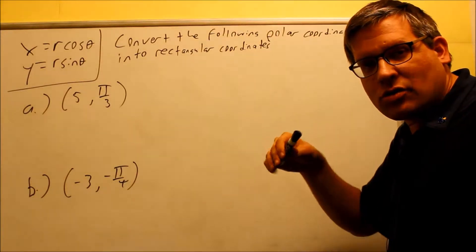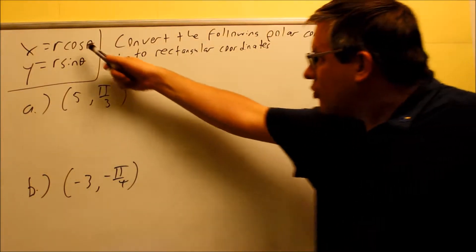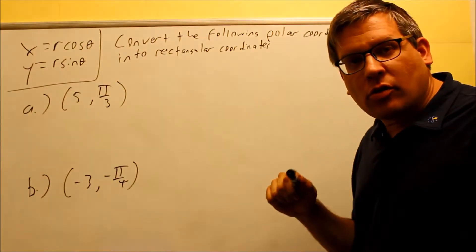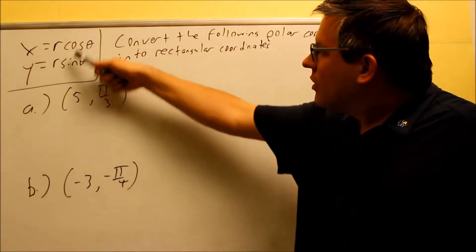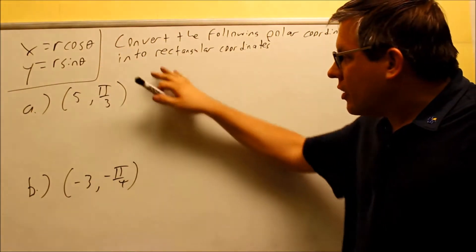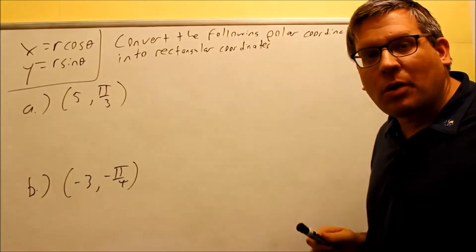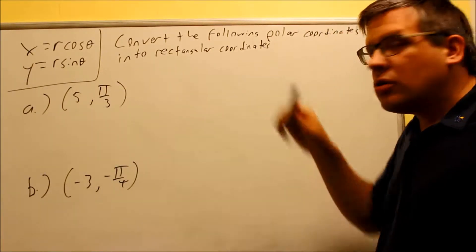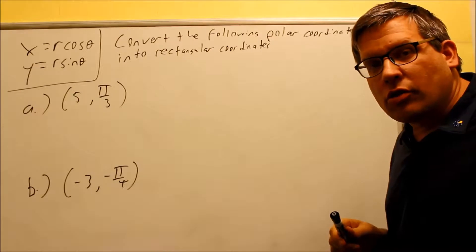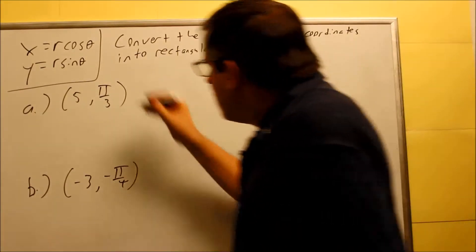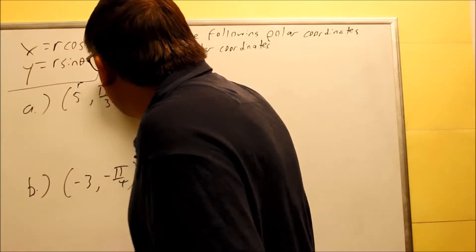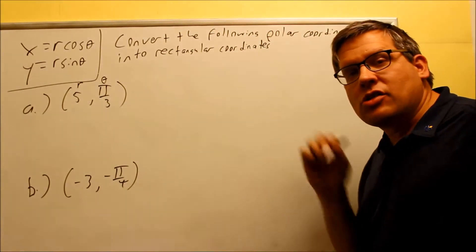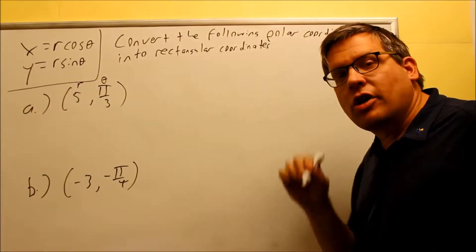In the first video in this section, I derived some formulas by drawing right triangles and using trig definitions. Here are two that are going to apply for these types of problems. I want to change the polar coordinates into rectangular coordinates. That means that my original r and theta — because polar coordinates are always written as r and theta — I want to change it over into an x and a y.